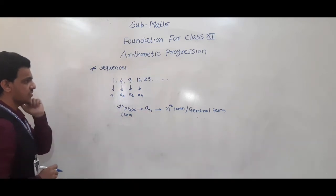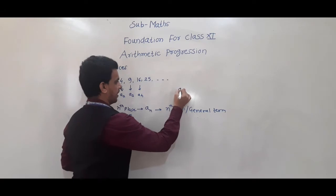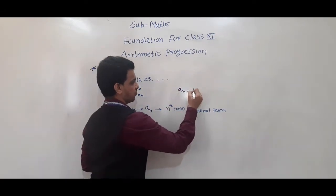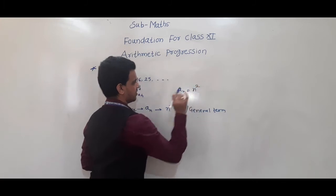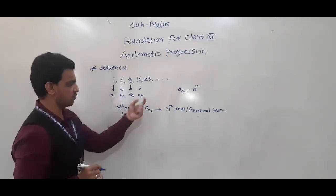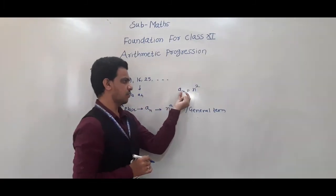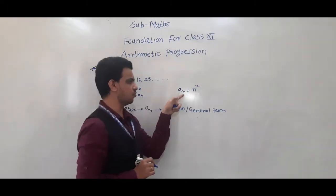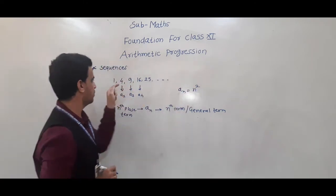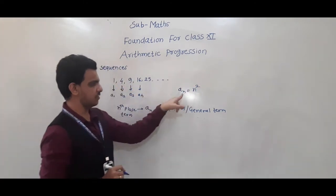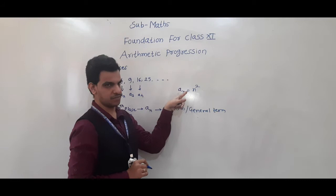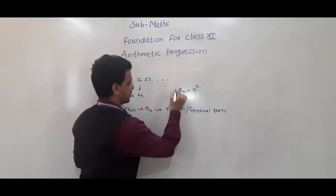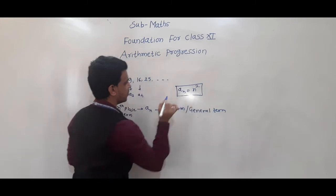In this sequence, what is the general term? If we have to write an, these are the squares, so we write the general term as an = n². Because if we put n = 1, 1 square is 1 — that is the first term. If we put n = 2, 2 square is 4 — that is the second term. A3, the third term, is 3 square = 9. So, the general term is an = n².